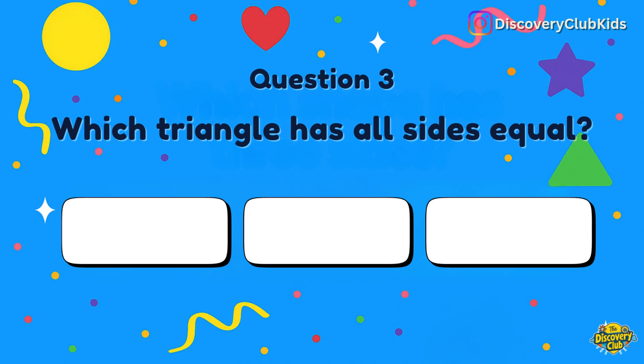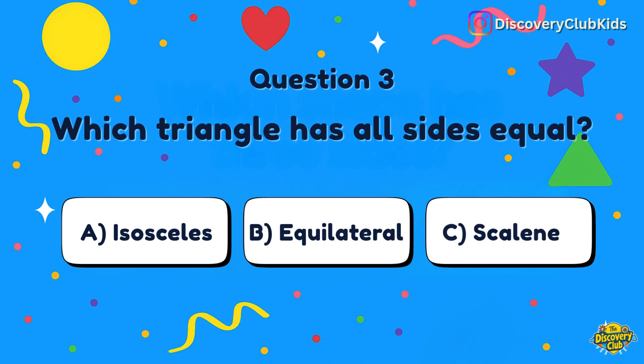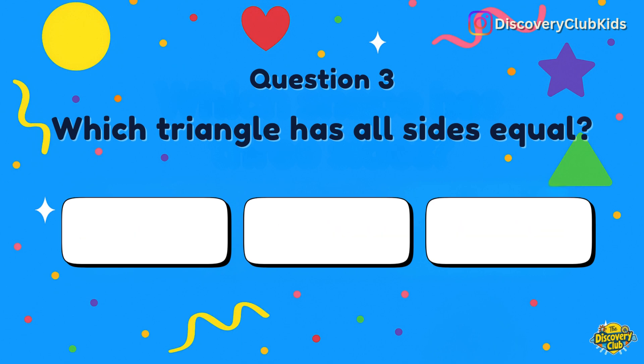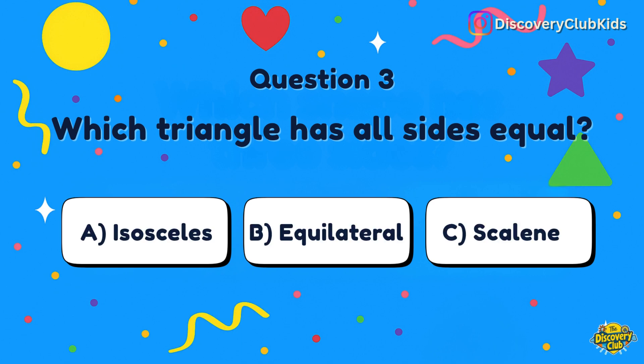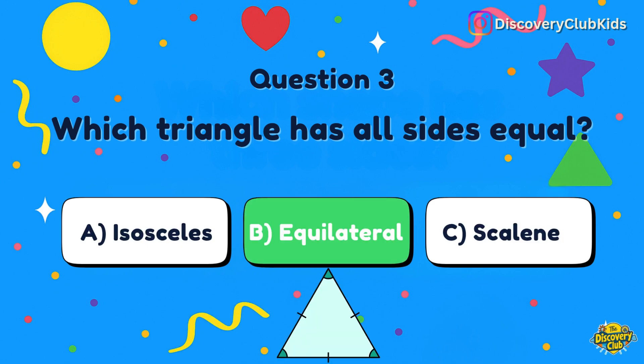Third question: Which triangle has all sides equal? Choose from isosceles, equilateral, or scalene. The correct answer is equilateral triangle.